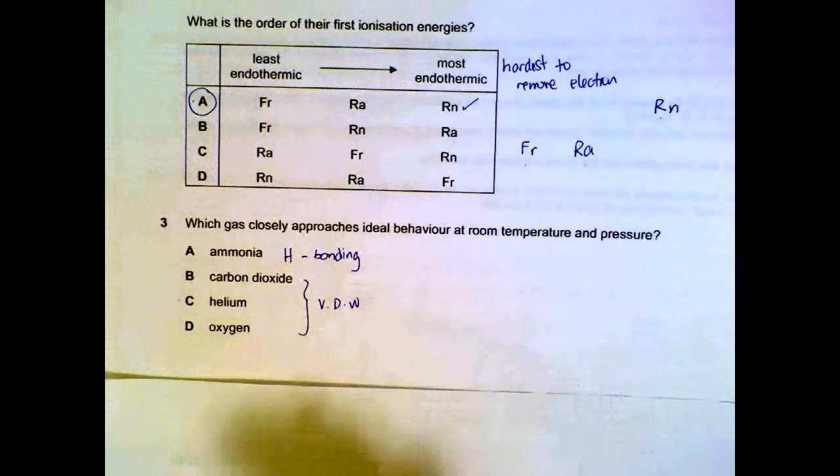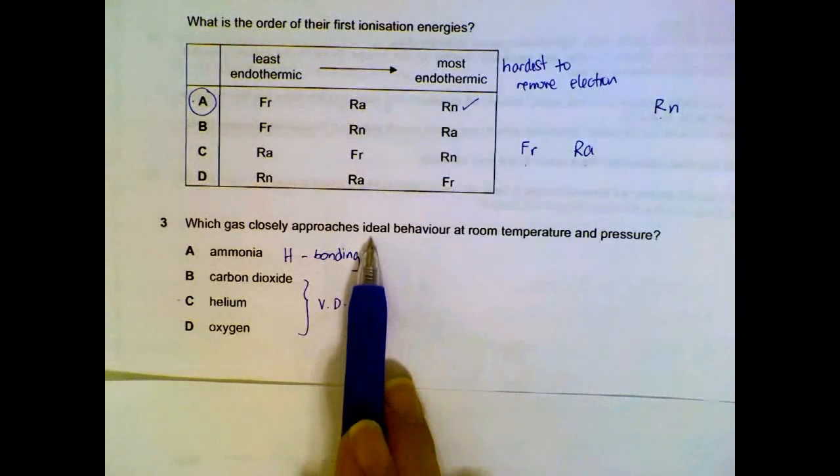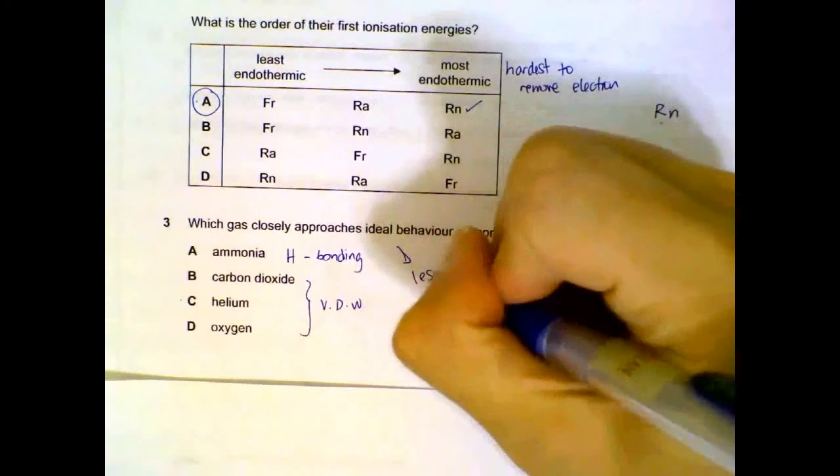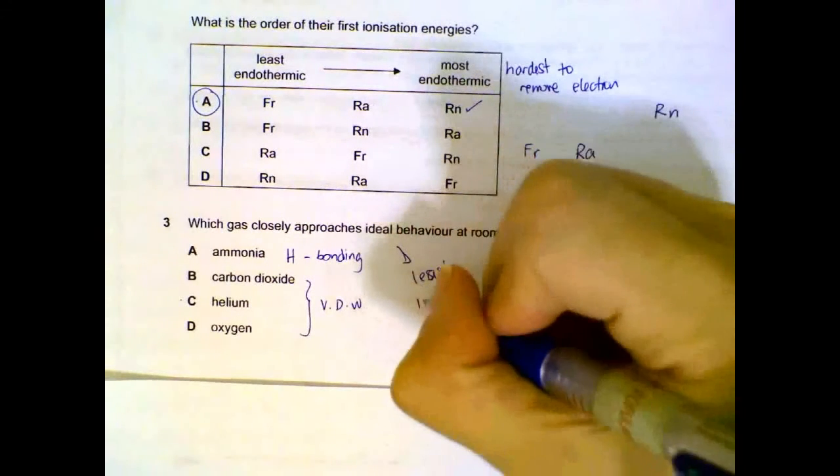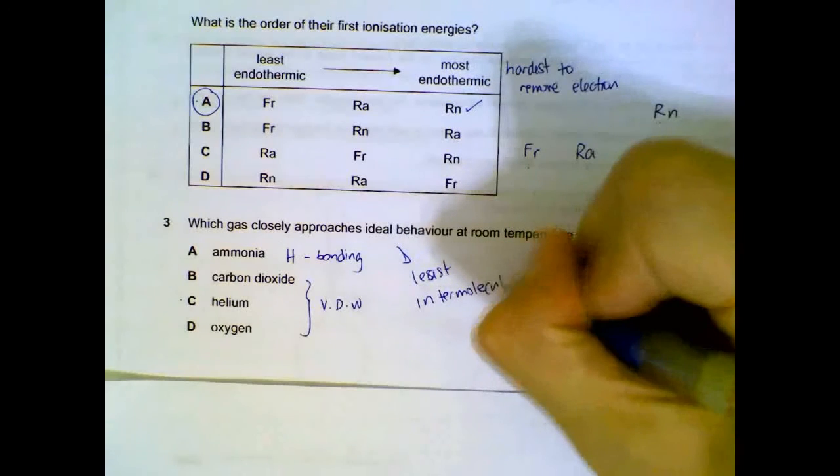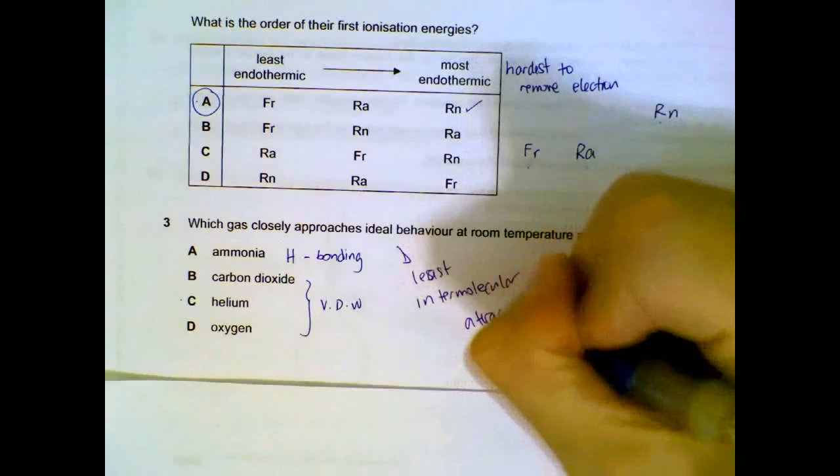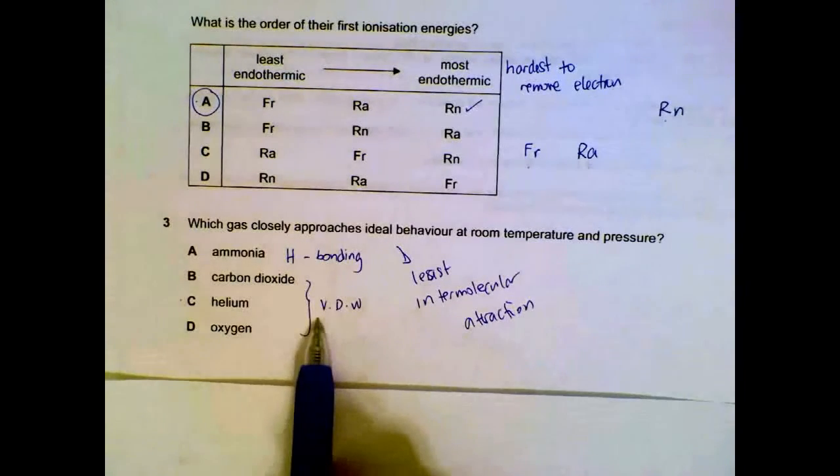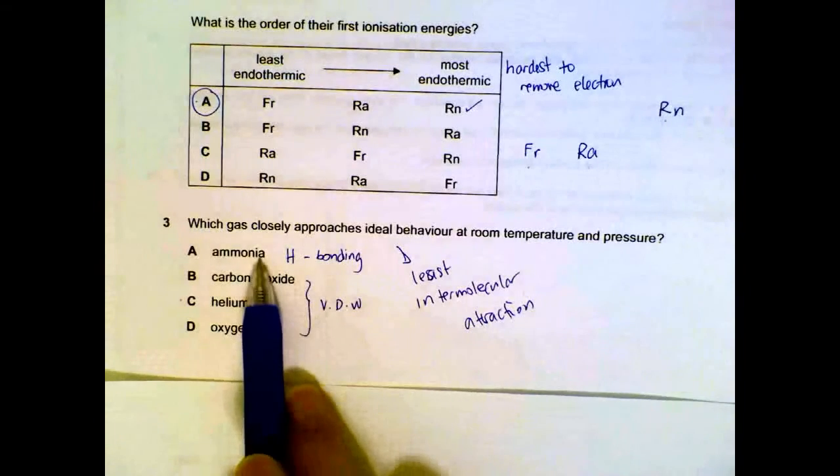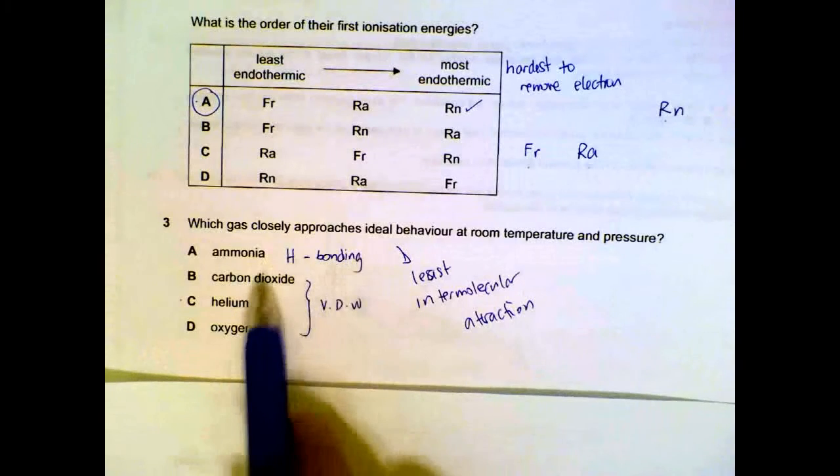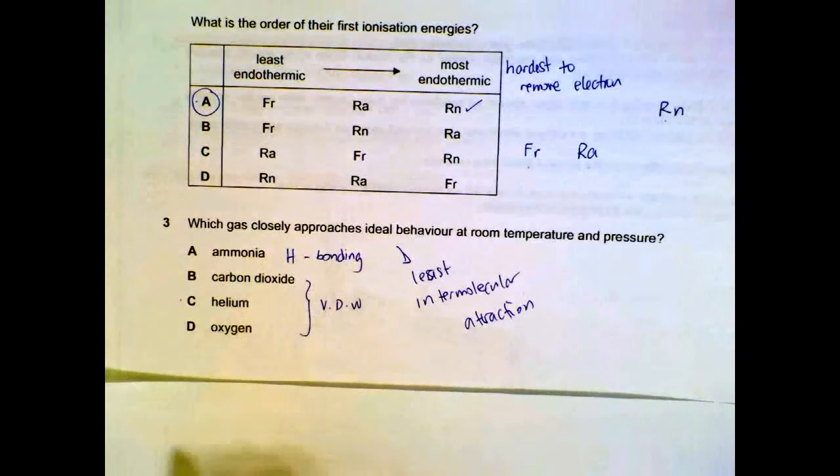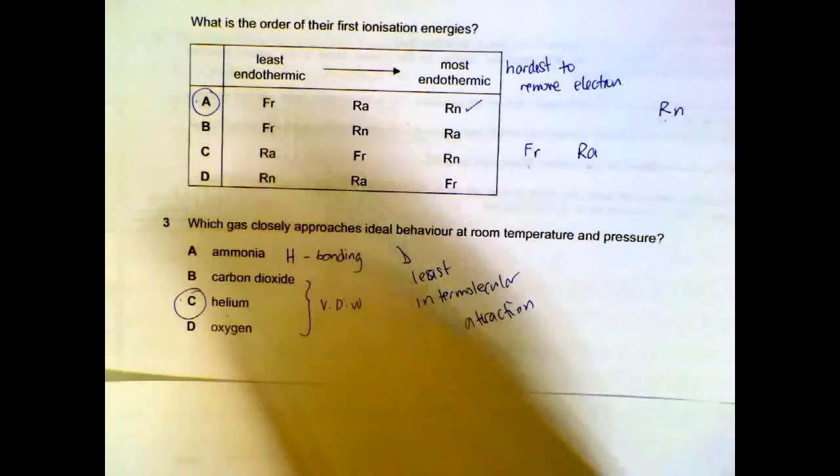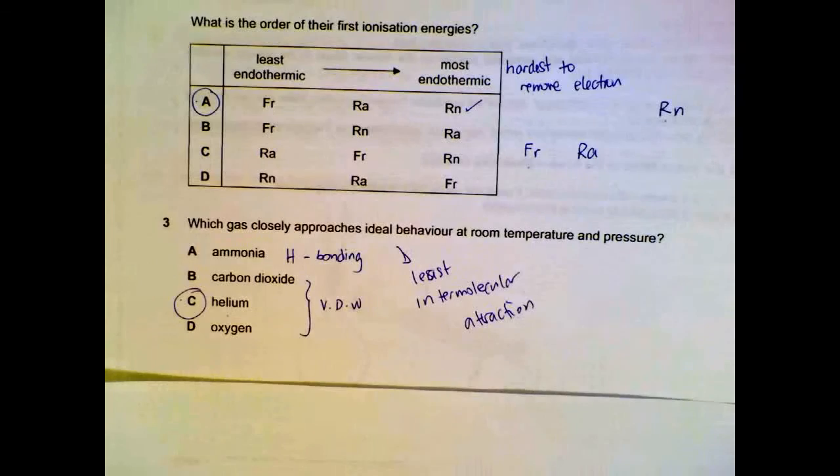Number three. Which gas closely approaches ideal at room temperature and pressure? You have to look for the one that has the least intermolecular attraction. That will mean that we are comparing the ones that have van der Waals forces. Ammonia has hydrogen bonding, so that will be out. Between the three that has van der Waals forces, helium has the lowest MR, so it will have the lowest intermolecular attraction.